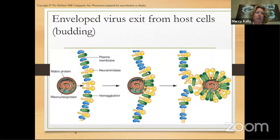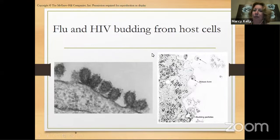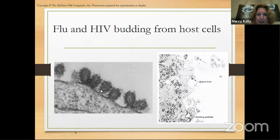This figure is actually the flu virus — the flu virus also exits a host cell the same way. These are two electron micrographs of different viruses leaving a host cell by this process called budding. You can see these buds coming off of the host cell — these buds contain flu virus.